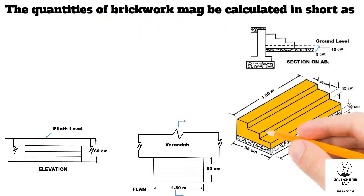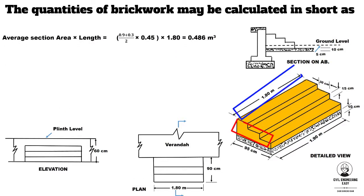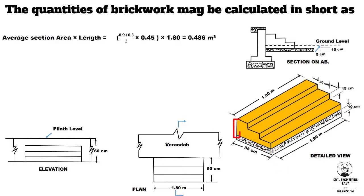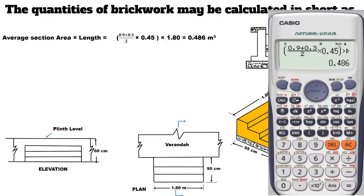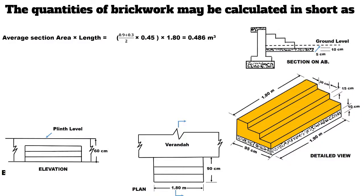To calculate the quantities of brickwork using the alternative method: average section area multiplied by length of step. The average section area equals average length × height = (0.9 + 0.3) ÷ 2 × 0.45, and length is 1.80 meter. Multiplying the section area with the length of steps gives 0.486 cubic meter.